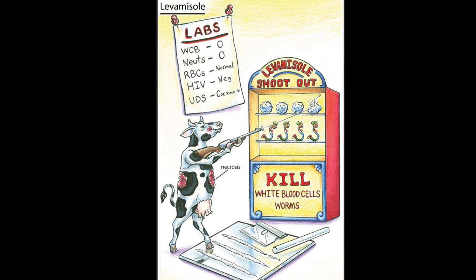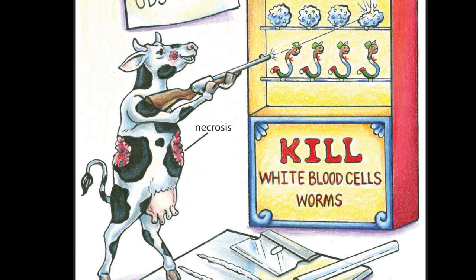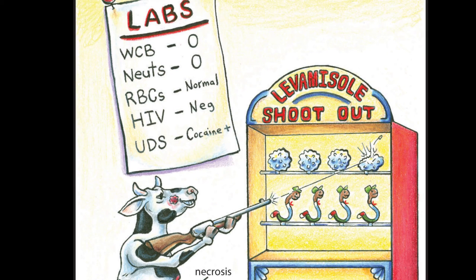We've seen cases where patients come into the emergency room with opportunistic infections, initially assumed to be full-blown AIDS. However, lab work reveals a white blood cell count of zero and neutrophil count of zero, prompting neutropenic precautions. Red blood cell count and platelet count are normal, so it's not a pan-anemia — only neutrophils and granulocytes are affected. The HIV test comes back negative, but the urine drug screen is positive for cocaine.